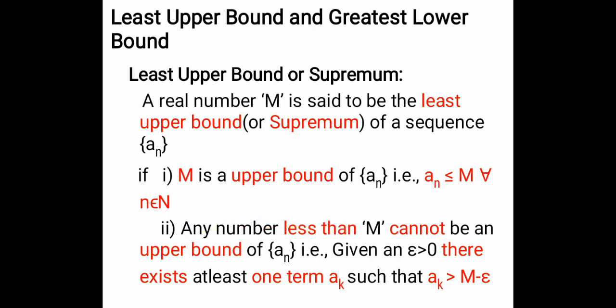Any number which is less than m will never be an upper bound of that sequence — it cannot be an upper bound. Therefore m itself is the least upper bound. That is, for given ε > 0, there exists one term aₖ such that aₖ > m - ε. So a real number m is said to be the supremum of the sequence if m is an upper bound and any number less than m cannot be an upper bound.